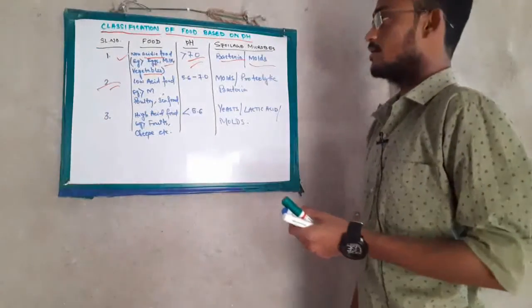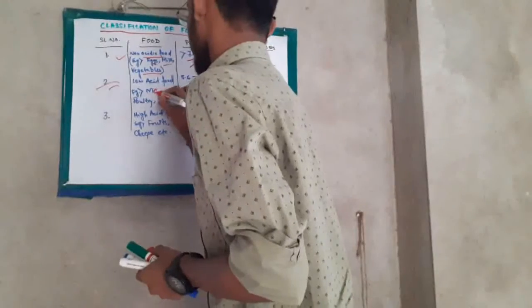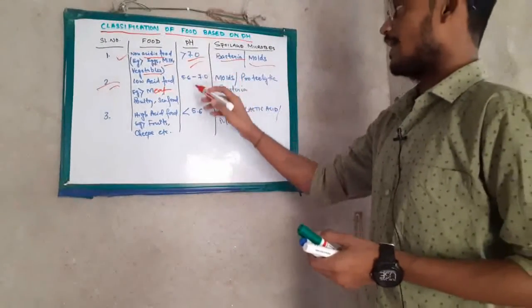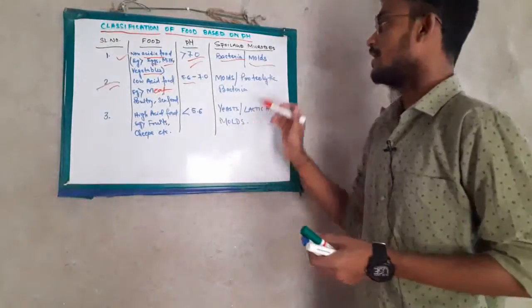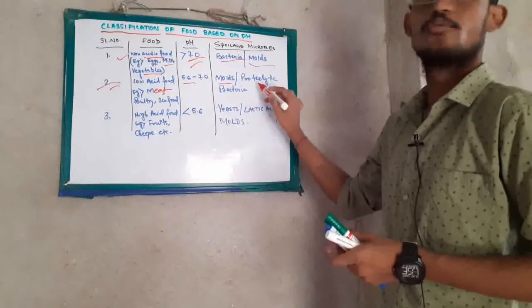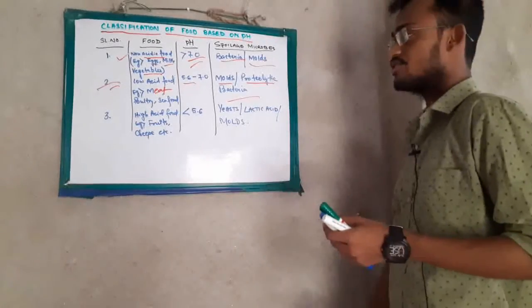Low acid food includes poultry, seafood, and any kind of meat, with pH between 5.6 to 7.0. The microbes that spoil this kind of food are molds and proteolytic bacteria.